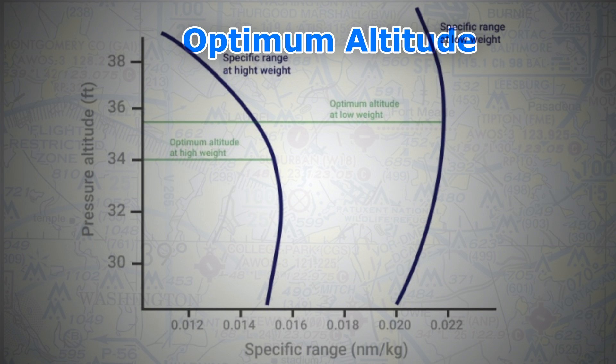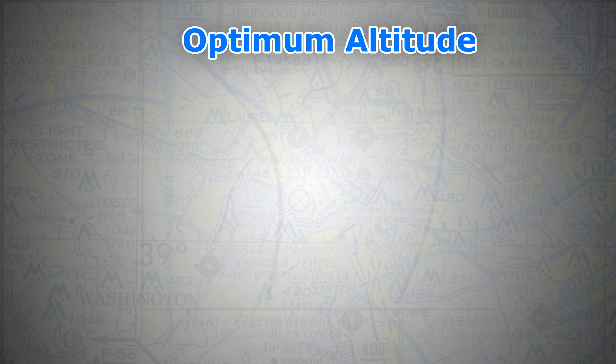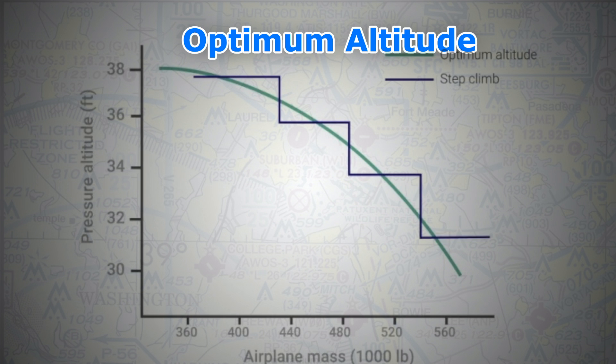At this altitude, the specified thrust setting also results in the minimum fuel consumption for that range. This altitude is almost never constant and changes due to aircraft weight, atmospheric conditions, and so on. Airlines urge pilots to fly at or as close to this altitude as possible because it is fuel efficient — and fuel is money.